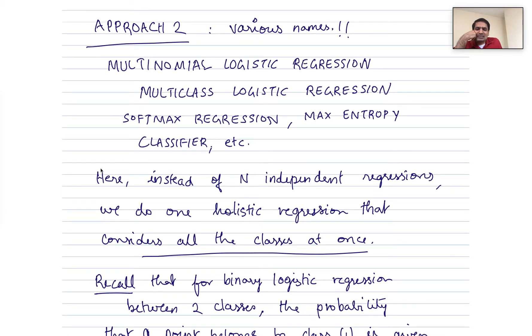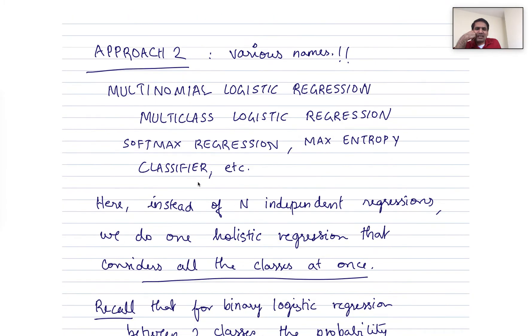So what is this approach? Recall that approach one had n independent binary classifiers and then used all of them to classify any given data into one of those n different classes. Here, instead of n independent regressions, we do one holistic regression that considers all the data all at once and all the classes all at once.